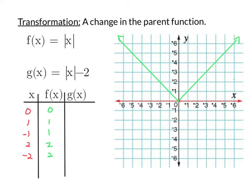The point 0, 0 on f of x is the vertex. But now when we plug it into g of x, we're going to take the absolute value of 0, which is 0, and then subtract 2. So now we're at negative 2, which is right here. For 1, 1 on f of x, absolute value of 1 is 1. But now, after taking the absolute value, we subtract 2, and that will put us at negative 1, which is right here.